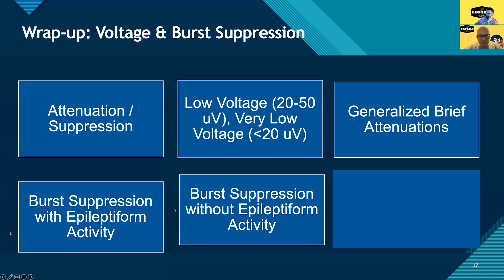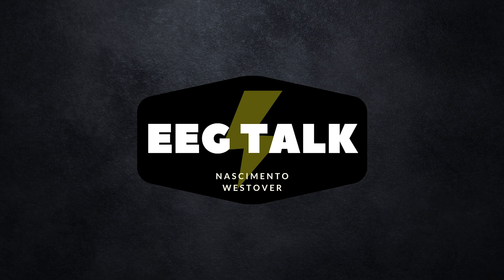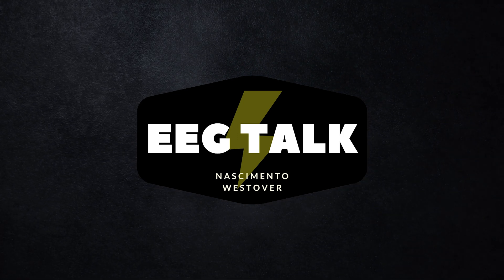We have two different burst suppression patterns — one with epileptiform activity and one without. The type with epileptiform activity can be broken down into those with highly epileptiform bursts and those without. Now we're ready to grade some EEGs.